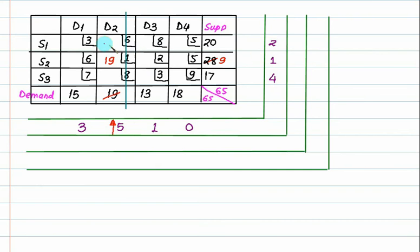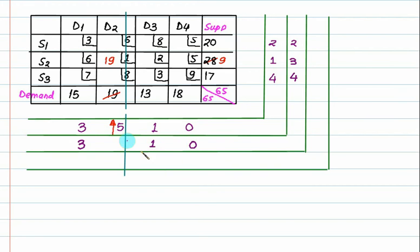Next penalty: lowest number is 3, next number is 5, penalty is 2. Lowest number is 2, next number is 3 or 5, so penalty is 3. Lowest number is 3, next number is 7, so penalty is 4. The highest penalty is 4, so in this row the minimum cost is 3 — allocate maximum 13. Strike out, left with 4.